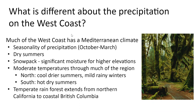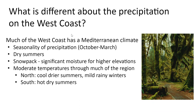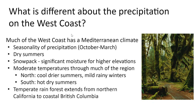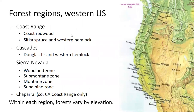Temperate rainforest extends all the way from northern California to coastal British Columbia, with greater than 100 inches of annual rainfall in some places. There is a location that recorded 12 feet of annual rainfall, which is pretty amazing. This precipitation really drives the forest regions we see in these areas. Today we're going to look at quite a few forest types, broken down by the mountain range they're native to.